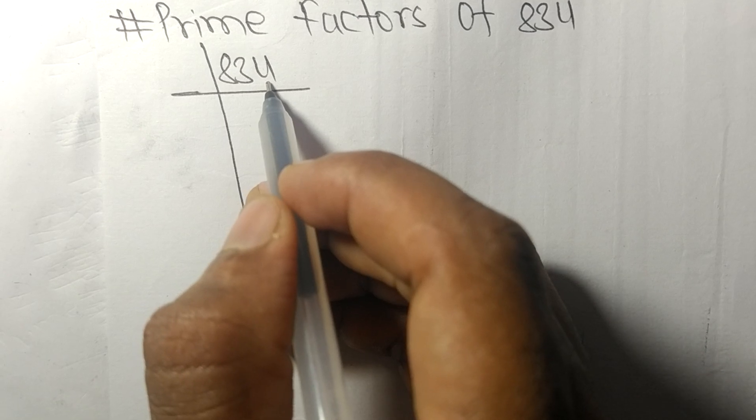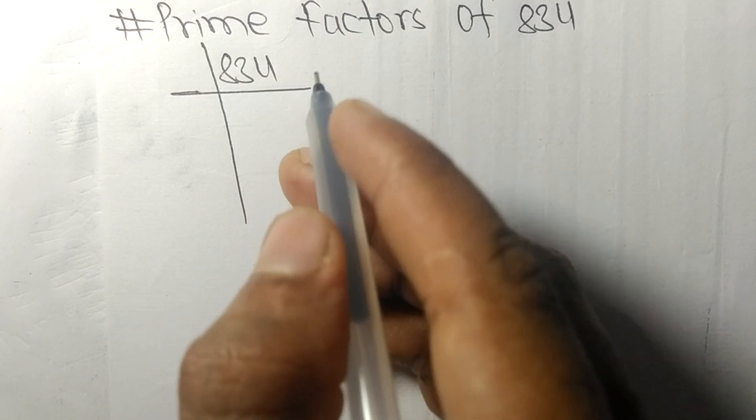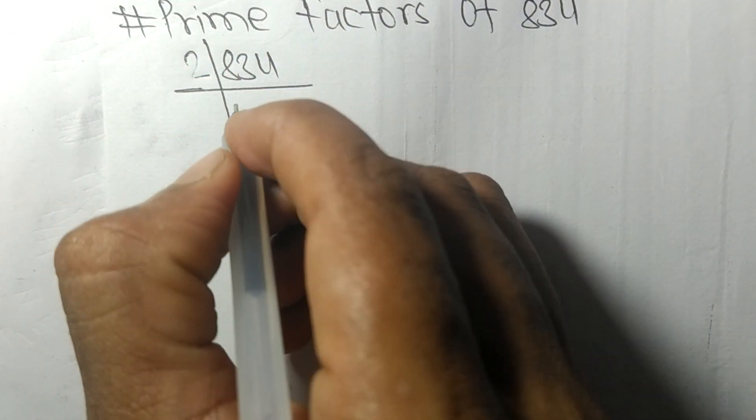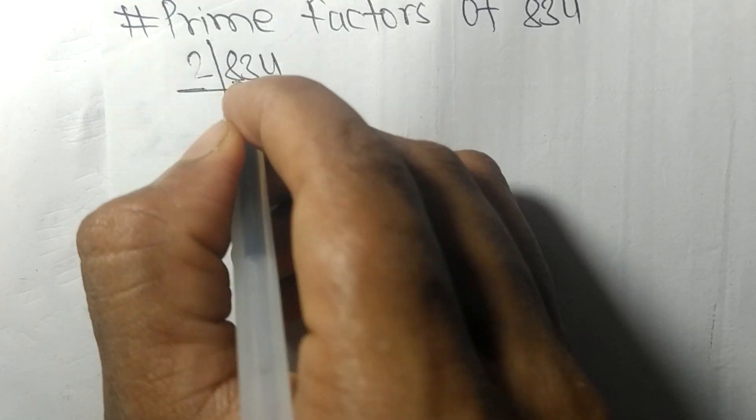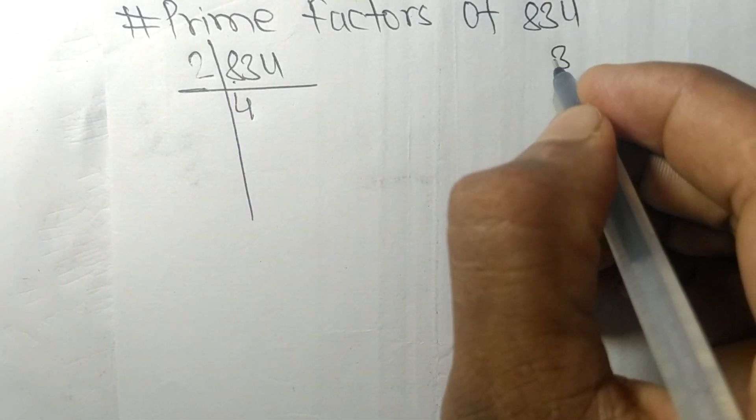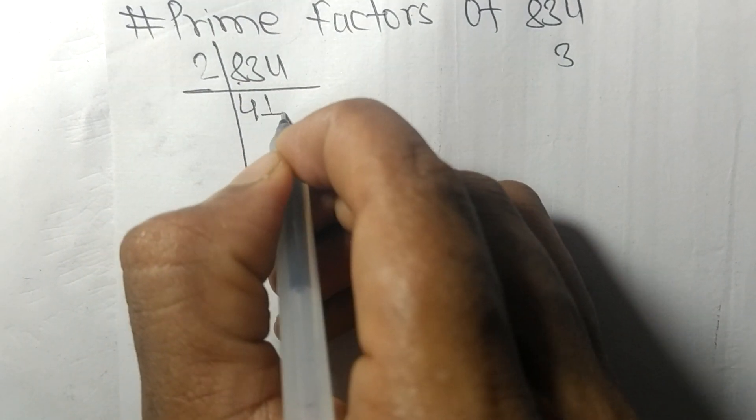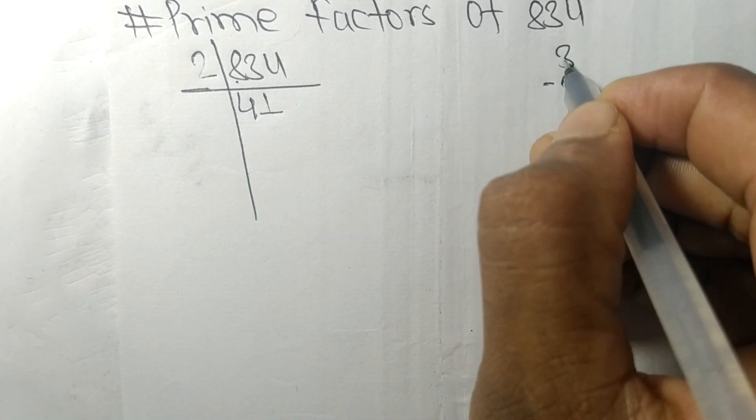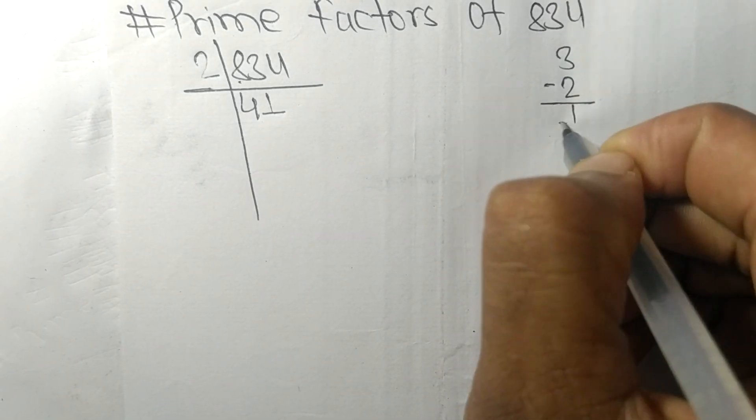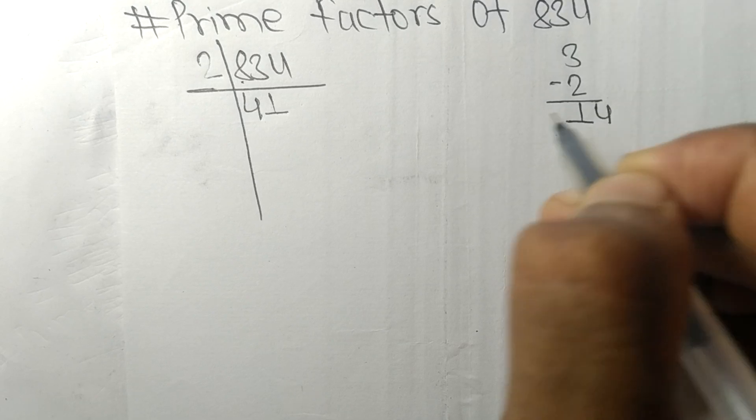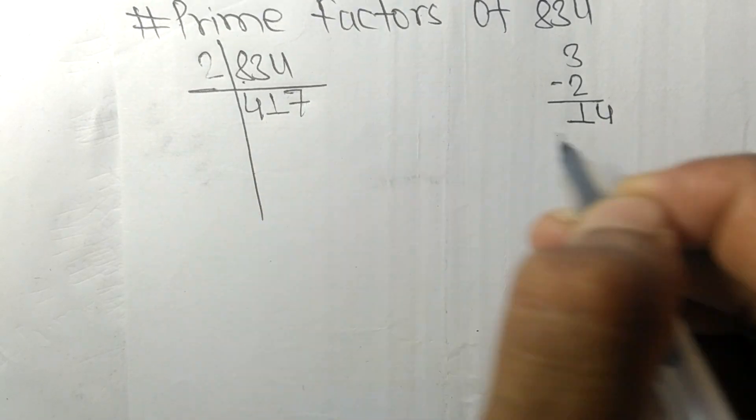It ends with an even number 4, so this whole number is divisible by 2. 2 times 4 means 8. Now we have 3, so 2 times 1 means 2. On subtracting we get 1, and this becomes 14. 2 times 7 means 14.